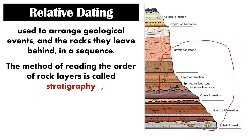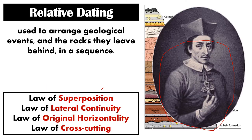Stratigraphy is the method of sequencing rock layers. With relative dating, we use different principles to sequence rock layers: the law of superposition, law of lateral continuity, law of original horizontality, and law of cross-cutting. Take note that these laws were proposed by Nicholas Steno, who originally presented them in his book, and they are still used by geologists today for relative dating.